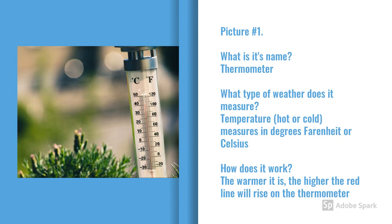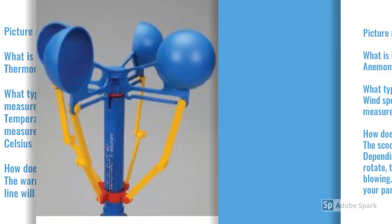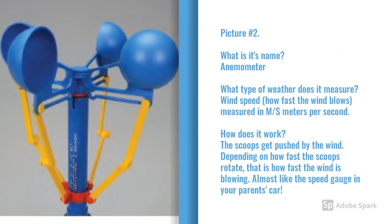Picture number one is called a thermometer. It measures the temperature, hot or cold, in degrees Fahrenheit or Celsius, and it works by the warmer it gets, the higher the red line will rise on the thermometer.